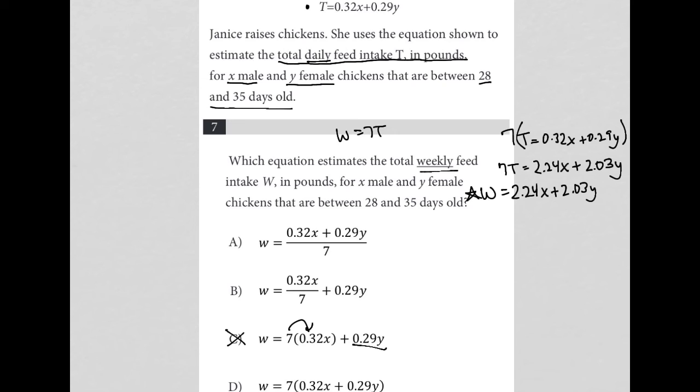For B, we're dividing 0.32 by 7. No reason to do that. Again, for A, also no reason to divide by 7, so A is gone. So D is the best answer here.